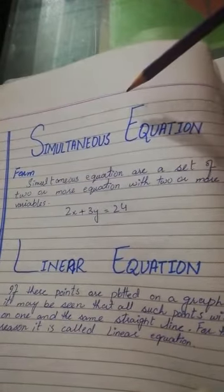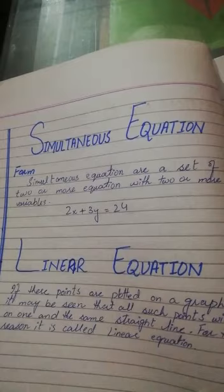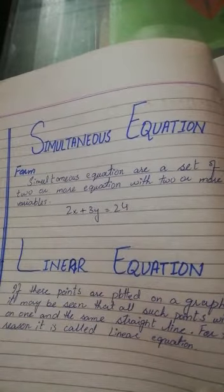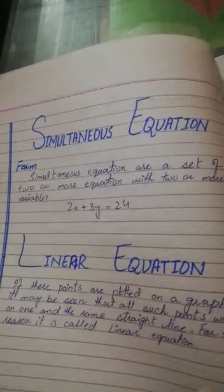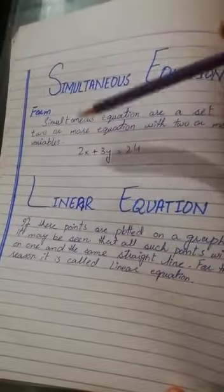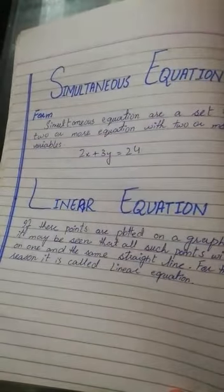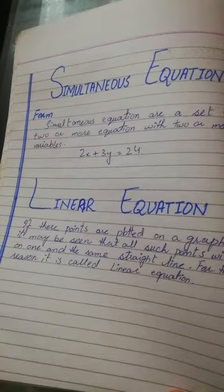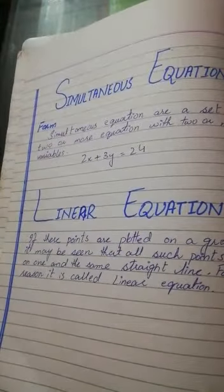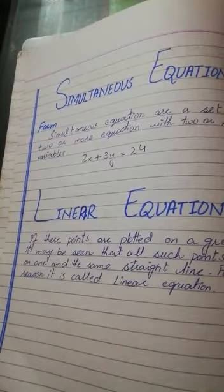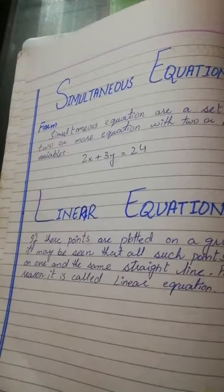A simultaneous equation is a set of two or more equations with two or more variables. We will identify which category of equation is a simultaneous equation and what is a linear equation. If their points are plotted on a graph, all such points will lie on one and the same straight line. For this reason, it is called a linear equation — because it produces straight line data.